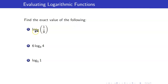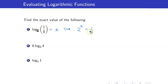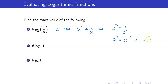For example, we want to evaluate logarithm of 1 eighth to the base 2. Recall that when you are getting the logarithm, it's just the exponent needed by your base in order to get the power. I will denote this first by x and transform it to exponential form: base is 2, exponent is x, and power is 1 eighth. To solve this, we express them using the same base: 8 is 2 cubed, but 1 over 2 cubed is 2 to the negative 3. Therefore, x is equal to negative 3.